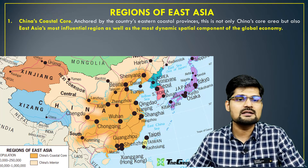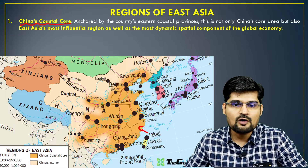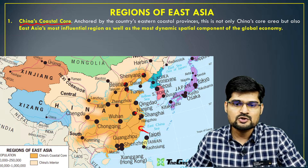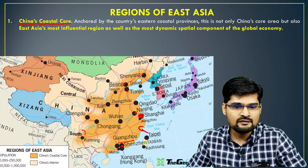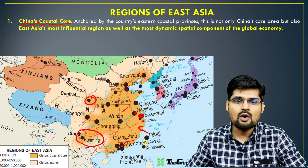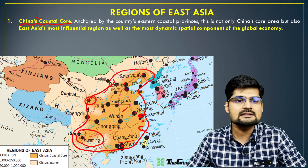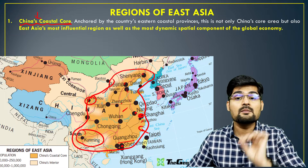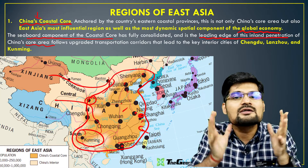China's coastal core stretches from Shenyang to Beijing to Tianjin to Nanjing to Shanghai, Hangzhou, Shenzhen, Guangzhou, and in the south Kunming, and in the west Lanzhou. All these provinces form the main eastern coastal core belt of China, which is very important for the global economy. In simple terms, this is the heart of China.